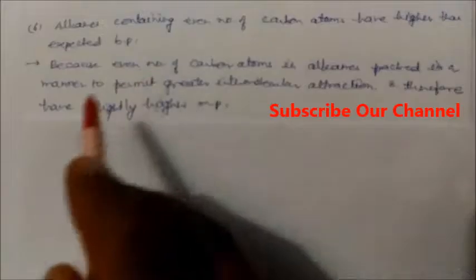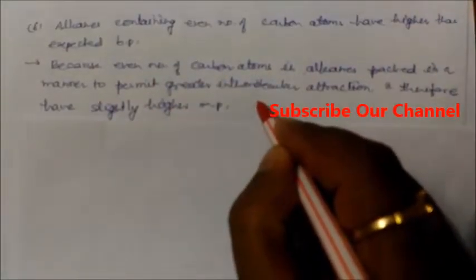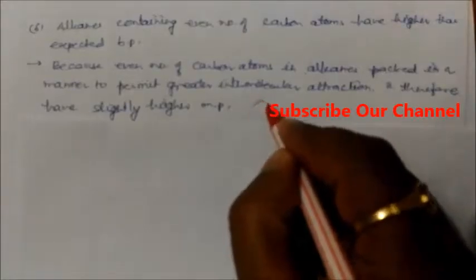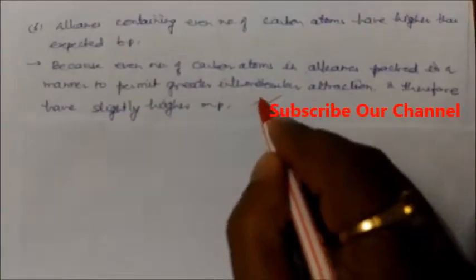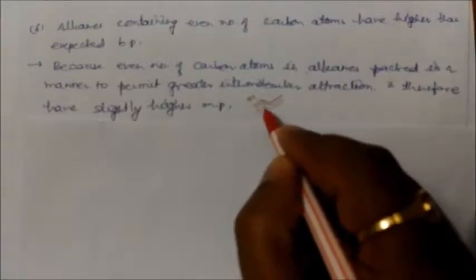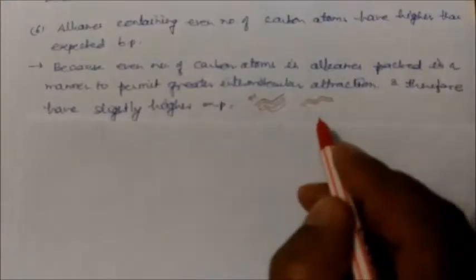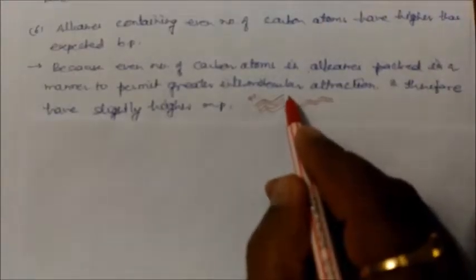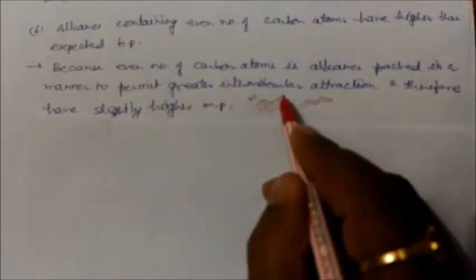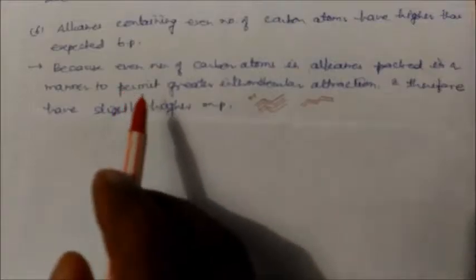For example, if you consider four carbon atoms, they can be packed symmetrically. This packing is more proper and symmetrical compared to chains with odd carbon atoms, where the packing is somewhat different. Because the packing is more symmetrical, their boiling point is a little higher.